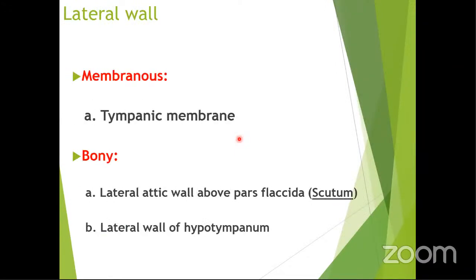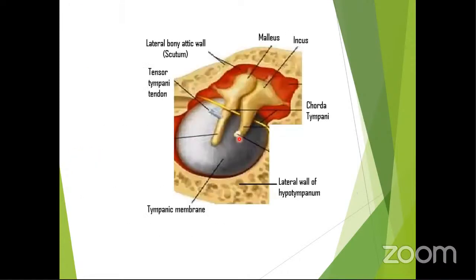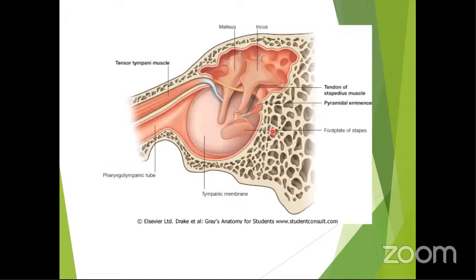The chorda tympani exits the tympanic cavity at the canal of Huguier in the anterior portion. The stapedius muscle arises from the pyramid and attaches to the neck of the stapes. The tensor tympani attaches below the neck of the malleus — not exactly at the handle as some texts state, but below it.